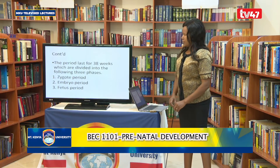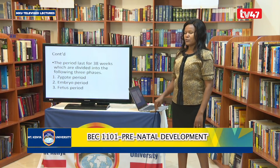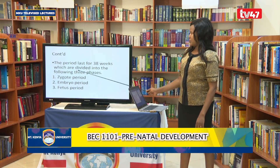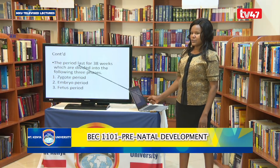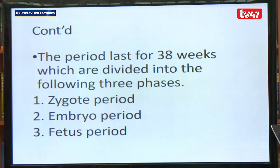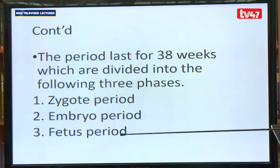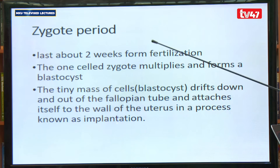After fertilization, the process of growth and development begins. It is a period lasting for 38 weeks and this stage of development is divided into three phases: the zygote phase or period, the embryo period, and the fetus period. We will look at what happens in each stage of development, beginning with the first phase — the zygote period.